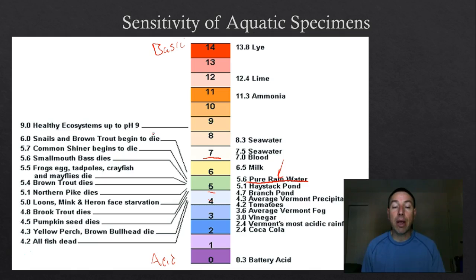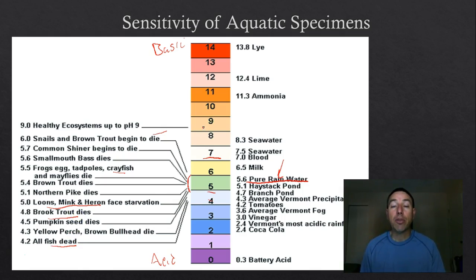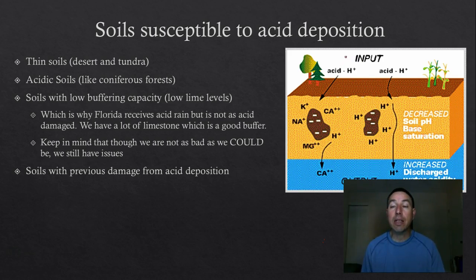Brown trout, which are very sensitive to pH, prefer pH around 6 or a little above. Crayfish begin dying around pH 5. pH 5 is the most critical threshold — below it, we really start losing all kinds of species and the food chain gets affected. Brook trout die at pH 4.8, and all fish are dead at pH 4.2. If a pond or lake cannot maintain its pH, we can drop it quickly, causing the fish kills I mentioned — shocking the fish when there's an acid deposition event.